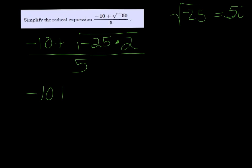So we get negative 10 plus 5i times the square root of 2 over 5. Now since we have all three of these, 10, 5i, square root of 2, and 5 are all divisible by 5, we're going to go ahead and divide them all by 5.